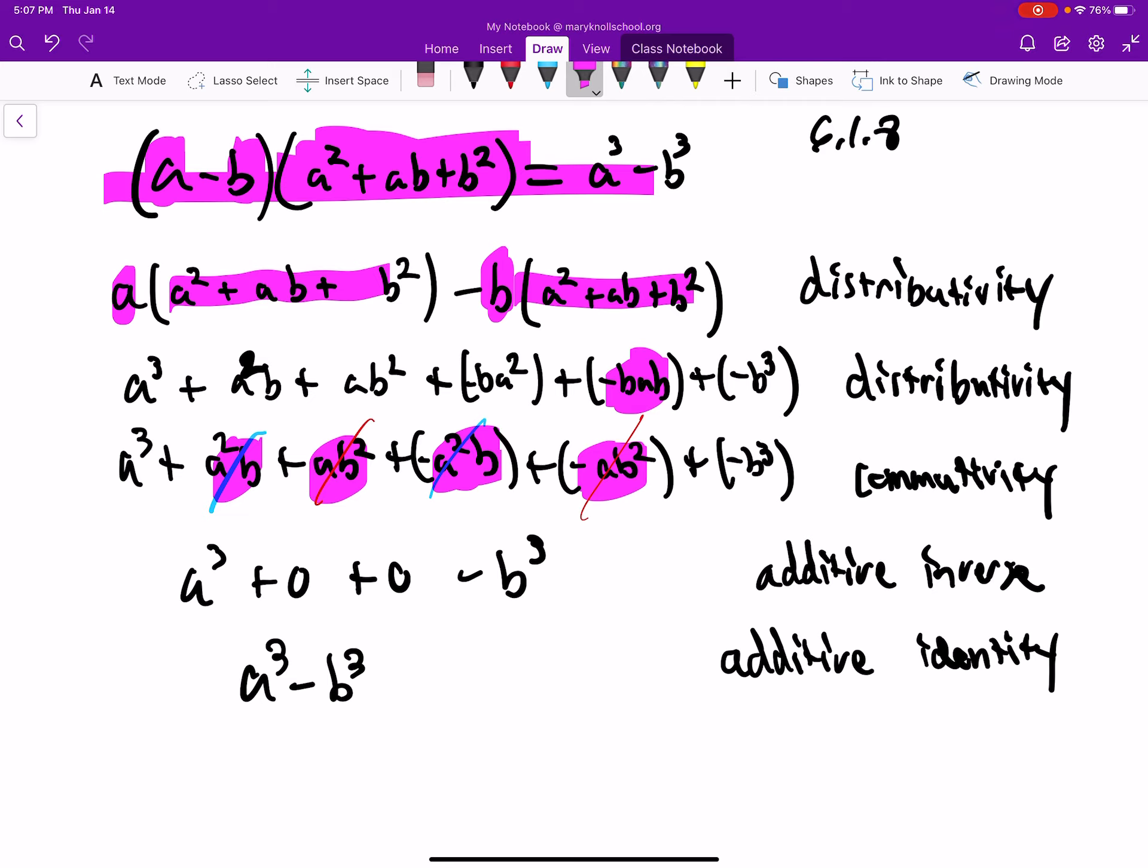Then the additive identity. Anything plus 0 is that same thing. So A cubed plus 0, well, that is A cubed, and 0 minus B cubed, that's negative B cubed.